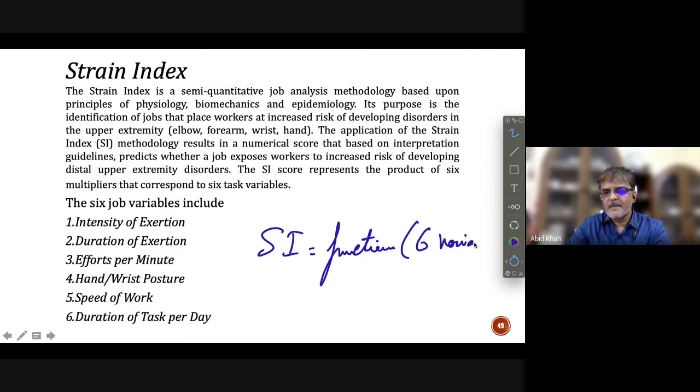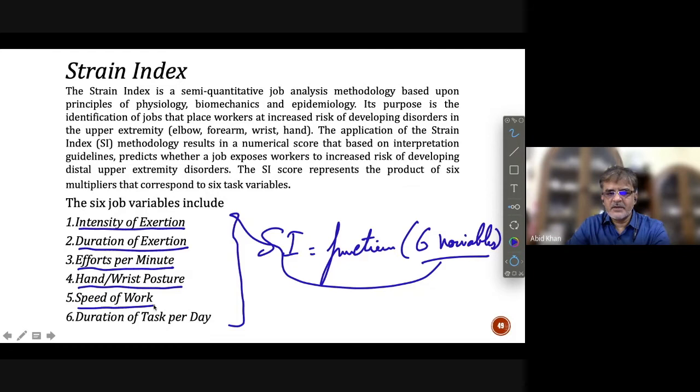What are these six variables? We see over here: intensity of exertion, duration of exertion, effort per minute, hand-wrist posture, speed of work, and duration of task per day.